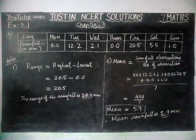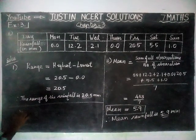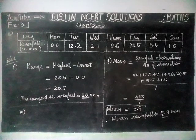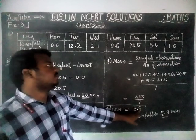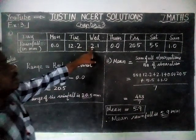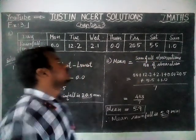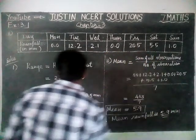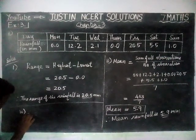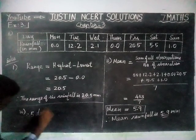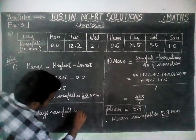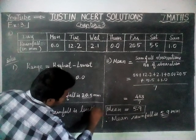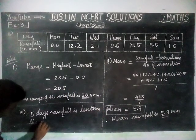Third question: on how many days was the rainfall less than the mean rainfall? The mean rainfall is 5.9mm. Checking each day, the days with rainfall less than 5.9mm are Monday, Wednesday, Thursday, Saturday, and Sunday. So totally 1, 2, 3, 4, 5 days — therefore 5 days had rainfall less than the mean rainfall.